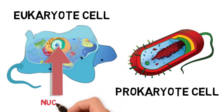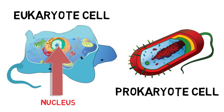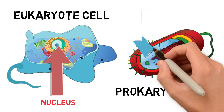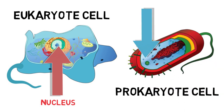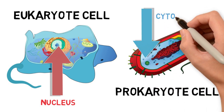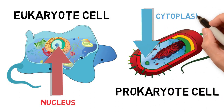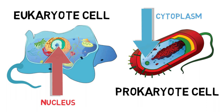Whereas in prokaryotes, like bacteria, the genome is located directly in the cytoplasm – which is the substance that makes up much of a cell.